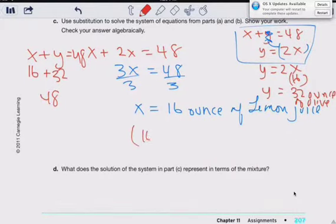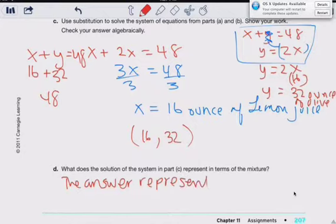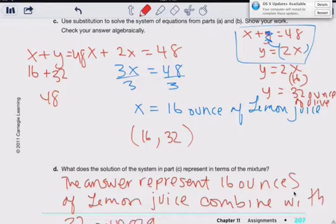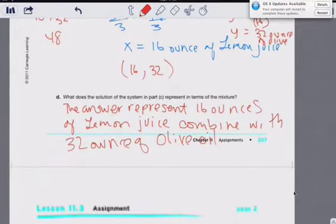What does the solution represent? The solution is 16 and 32, right? What does the solution in part C represent? The answer represents 16 ounces of lemon juice combined with 32 ounces of olive oil. I'm going to post this page and then we'll do the second part.